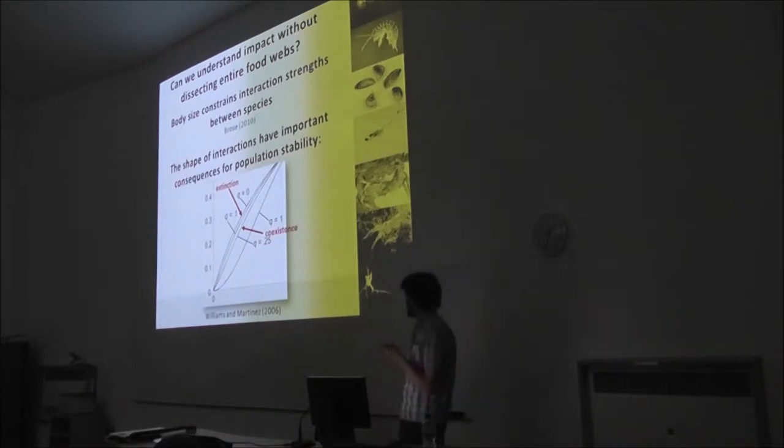This is a graph by Williams and Martinez, and it really shows the bottom part of a couple of functional response curves, and they show, using simple food webs, that the difference between shapes that promote extinction and those that promote coexistence are very slight. You might be rather skeptical about that, and how that translates to real food webs, and I know I am a little bit. Nonetheless, it's something worth bearing in mind.